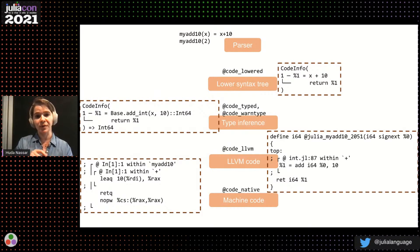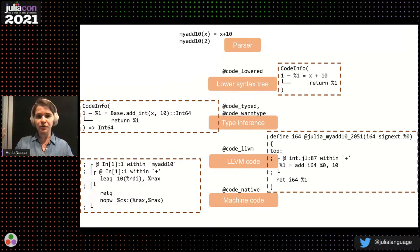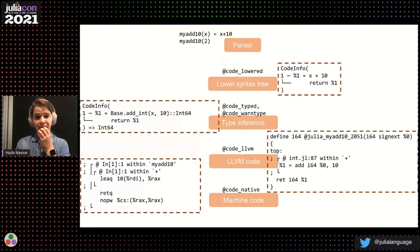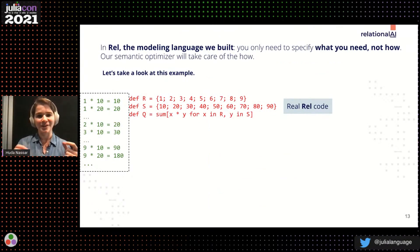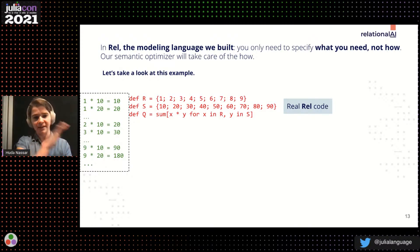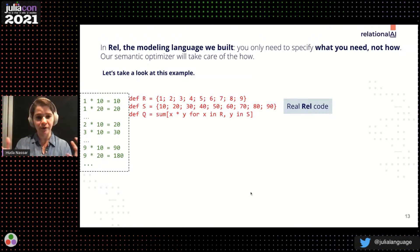If I ran my_add_10(2.0) instead, the values would be different — it would be 10.0 and an fadd instruction. As a user, you didn't have to specify which addition to use; you just wanted to do addition, and the compiler was smart enough to specialize on the type. A similar thing happens in REL: we are smart about deciding the algorithm to run on your data.